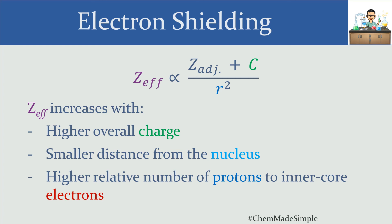There are things we didn't get into here, such as exactly how to calculate the effective nuclear charge and the effects of larger orbitals, which may not shield outer electrons as well and how that increases attraction. There are many concepts we didn't cover in this lesson, but that wasn't the point. The goal was to have an overall conceptual understanding of effective nuclear charge and the factors that contribute to it.